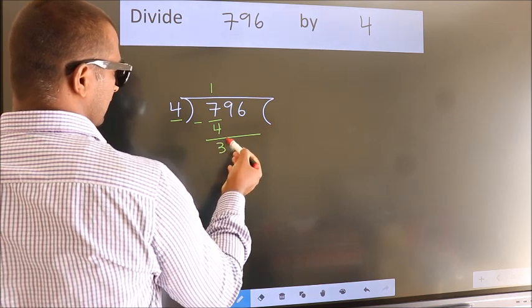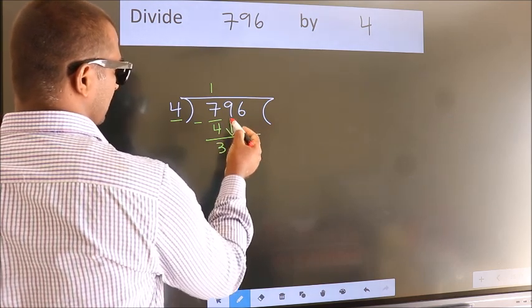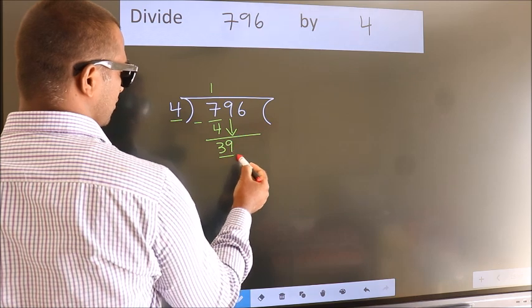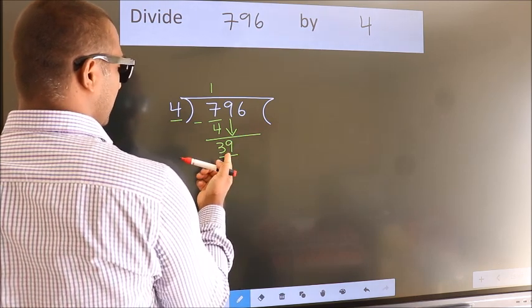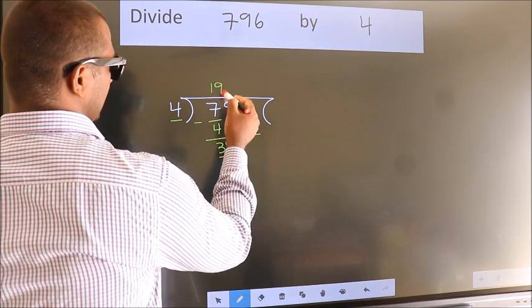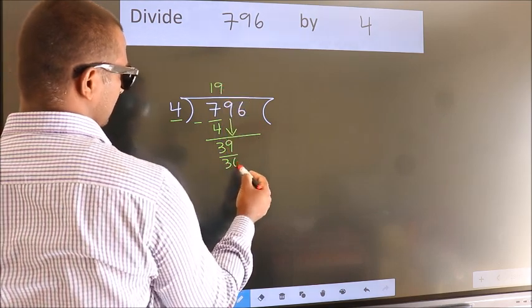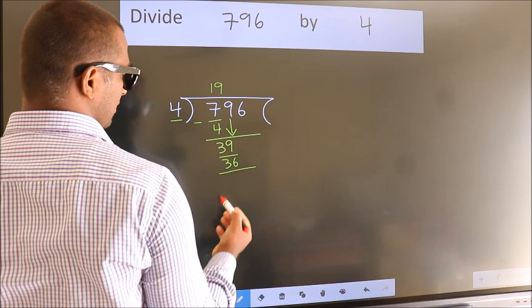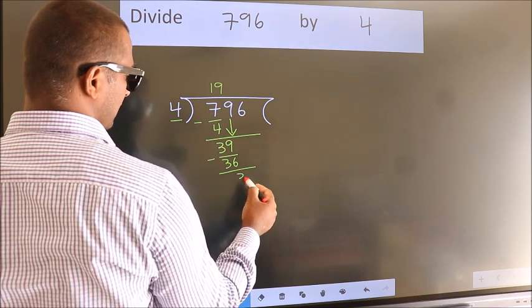After this, bring down the beside number. So 9 down. So 39. A number close to 39 in the 4 table is 4 nines, 36. Now we subtract. We get 3.